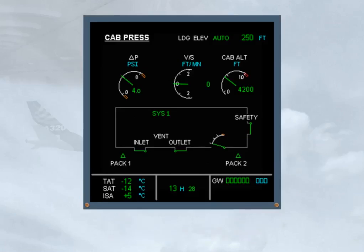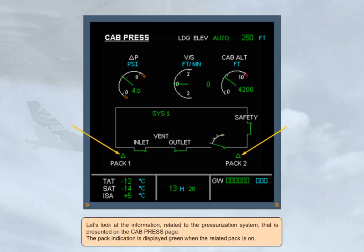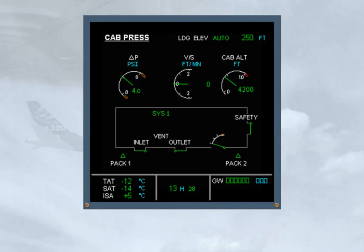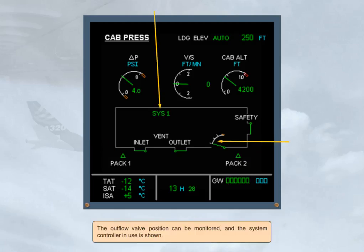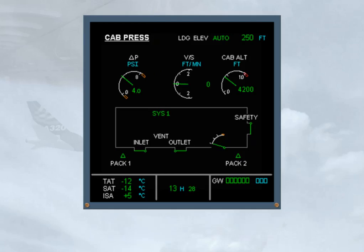Let us look at the information related to the pressurization system that is presented on the cab press page. The pack indication is displayed green when the related pack is on. The outflow valve position can be monitored, and the system controller in use is shown. There is a single indication for the safety valves.